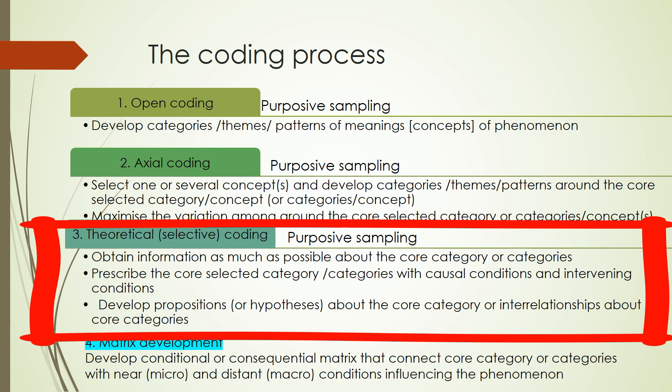At the theoretical or selective coding stage, we again conduct purposive sampling to refine the meaning of the core concepts. We try to obtain as much information as possible — to the point that we have found literally everything about that concept and the meaning of its categories.